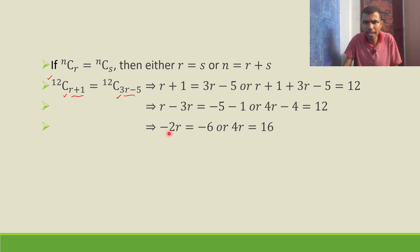From -2r = -6, the negatives cancel and dividing by 2 gives r = 3. From 4r = 16, dividing by 4 gives r = 4. So r = 3 or r = 4.